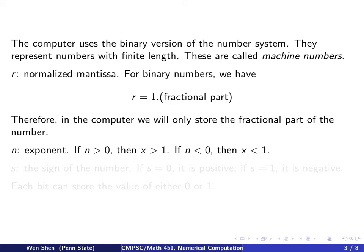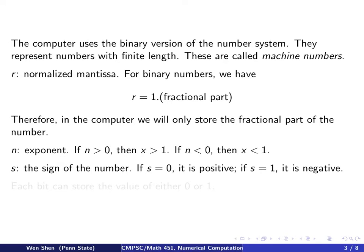If the exponent n is greater than 0, then x is greater than 1. If n is less than 0, then 2 to a negative power gives a value less than 1. For the sign s: if s is 0, this denotes a positive number, and if s is 1, it denotes a negative number. Since the computer stores only binary form, each bit can store either 0 or 1.